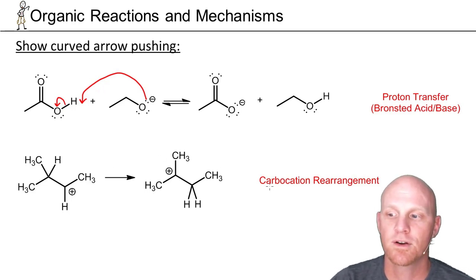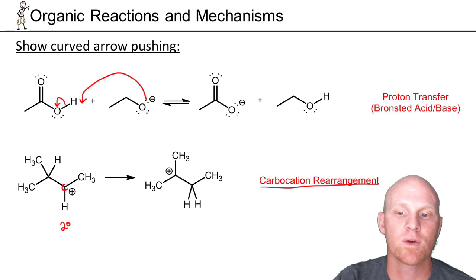The next one here we call carbocation rearrangement. We'll deal with this in this first semester a little bit later, not quite in this chapter, but we'll introduce ourselves to it here. A carbocation is a carbon with only three bonds and an empty P orbital. This carbon is ranked based on how many other carbons it's bonded to. We saw these a little bit earlier. This is a secondary carbocation.